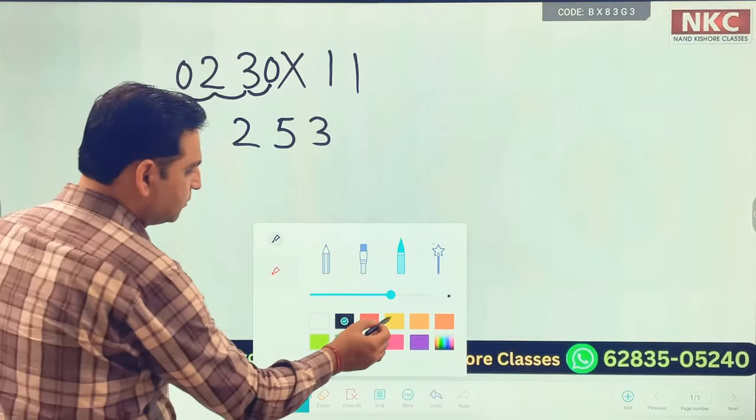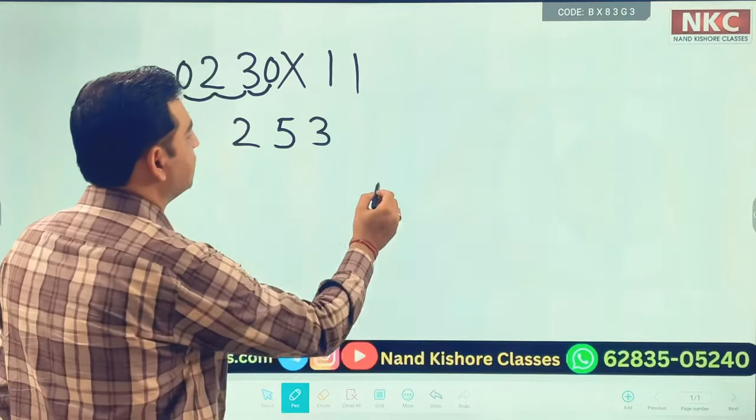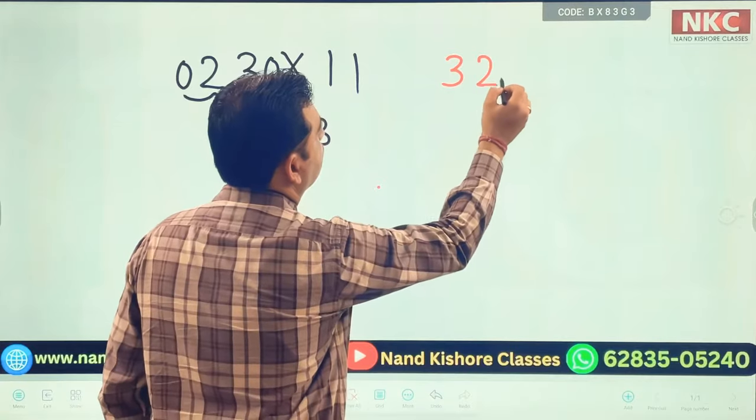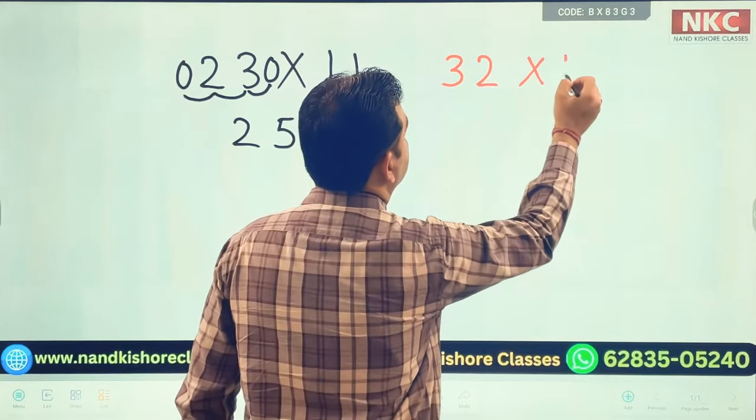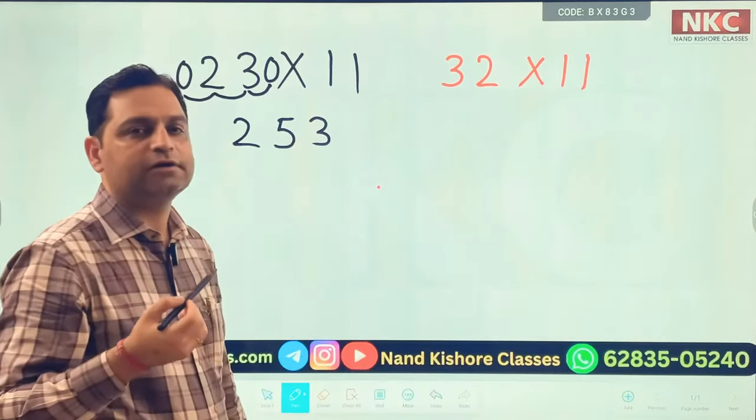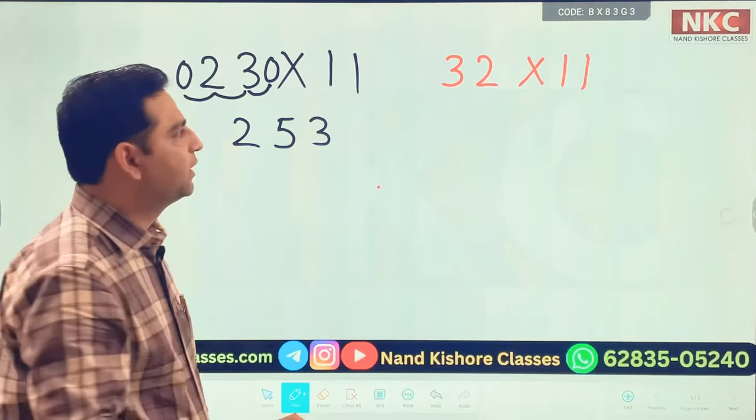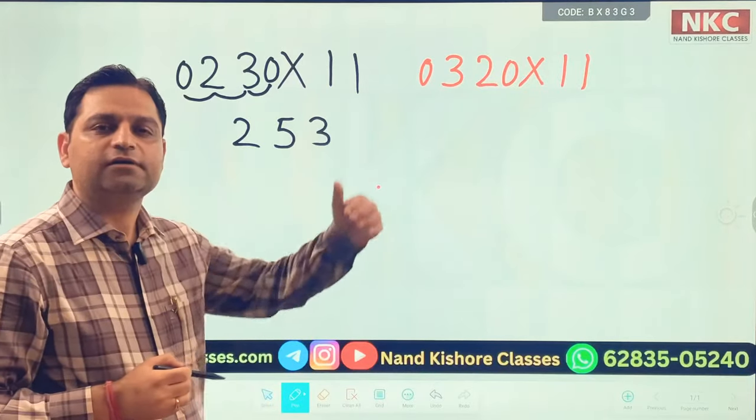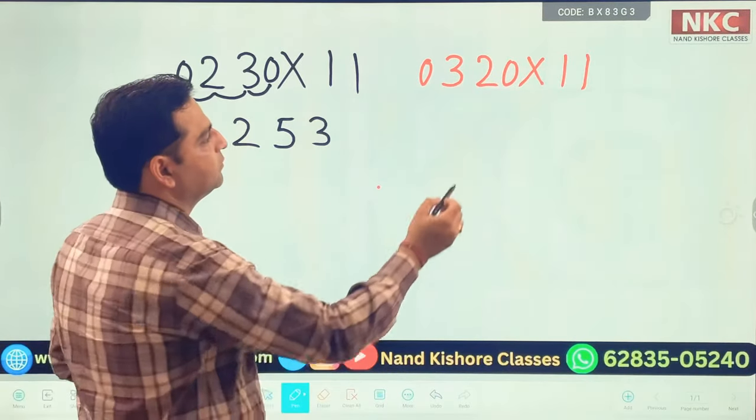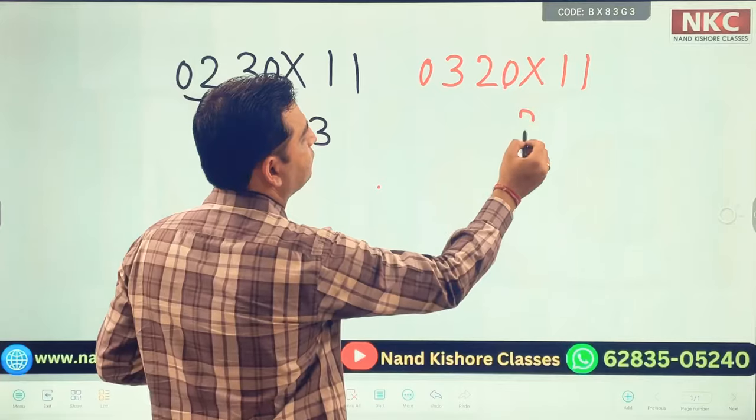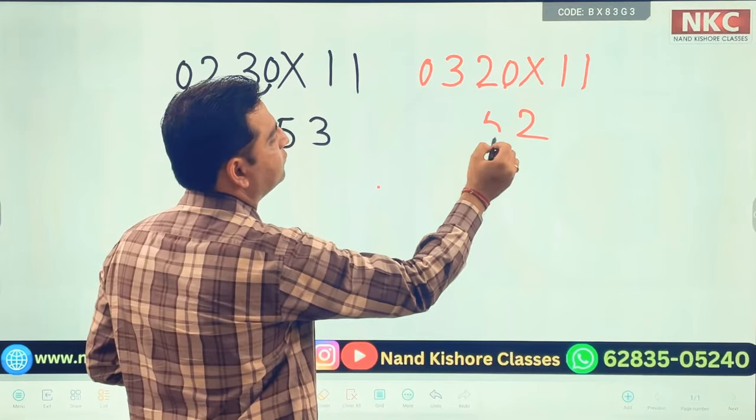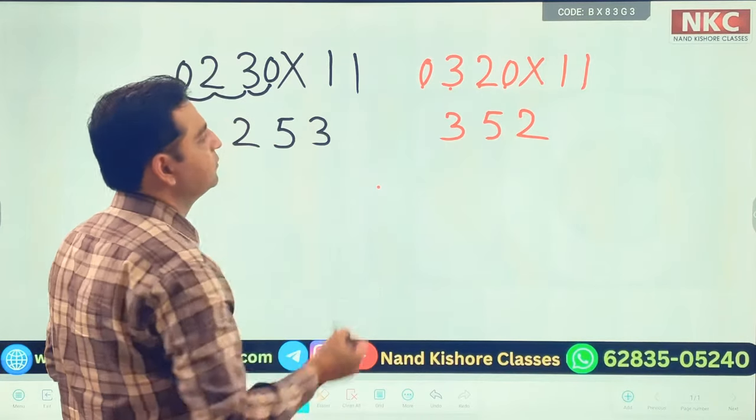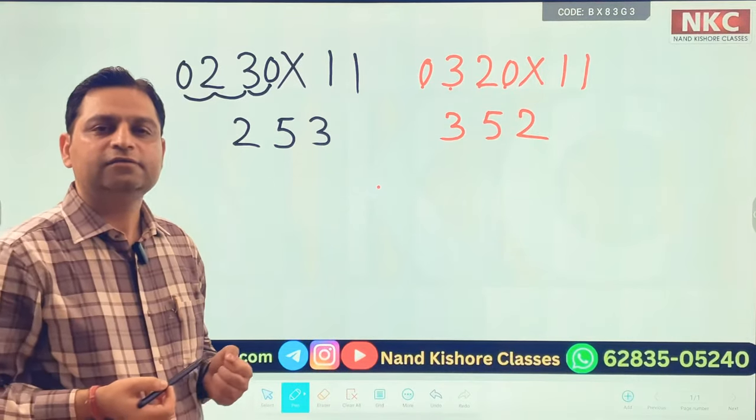Let me move to another question. Let's suppose you need to multiply 32 with 11. You want to multiply 32 by 11, but I have told you just place a 0 in the left and right and start adding from the end. 0 plus 2 is 2, 2 plus 3 is 5, and 3 plus 0 is 3. Final answer will be 352.